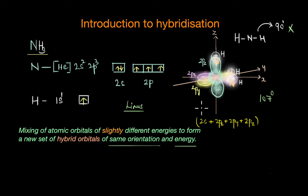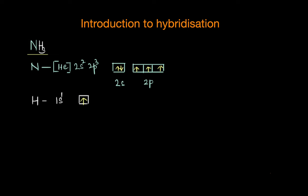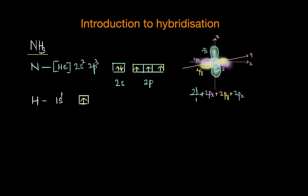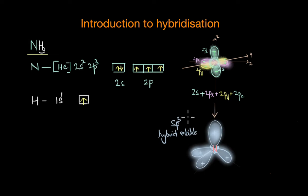In the case of ammonia, the 2s and the three 2p orbitals would hybridize to form 4 identical equivalent sp3 hybrid orbitals. The 2s and the three 2p orbitals mix up and hybridize to form 4 equivalent sp3 hybrid orbitals. How do we get 4? Because we have 1 2s and 3 2p orbitals mixing, so the number of hybrid orbitals formed is the same as the number of orbitals that are mixing.